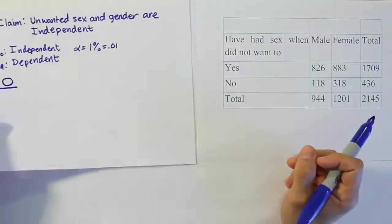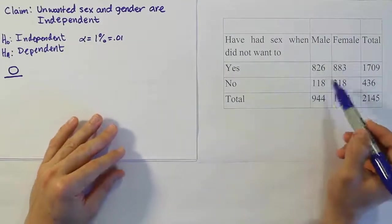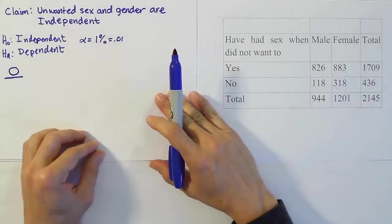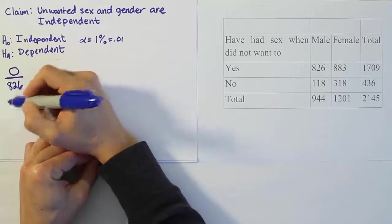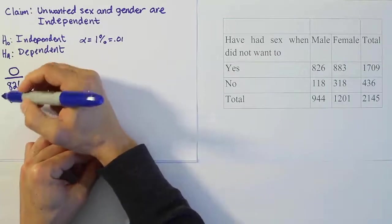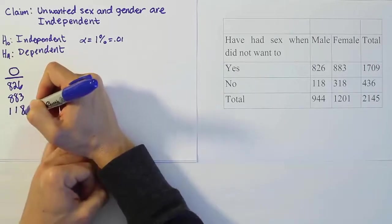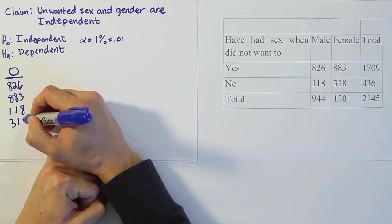In our problem the observed data is these four cells. The other cells are just the total. The observations are going to be 826 for the first cell, 883 for the cell next to that, 118 for the first cell in the second row, and then 318 for the value next to that.